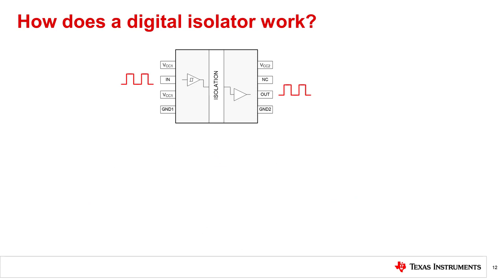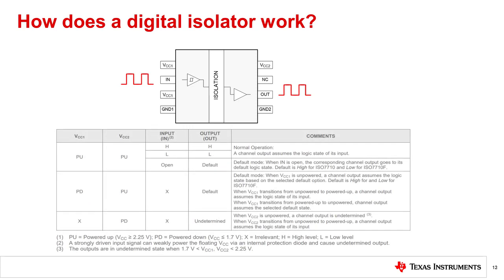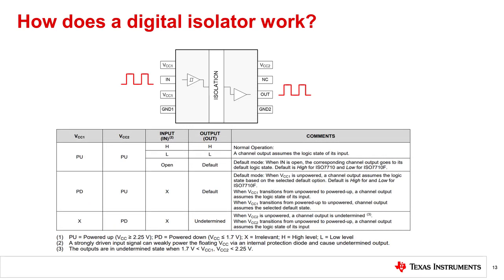Digital isolators use CMOS or TTL logic switching technology and have specified default output states of high or low that can be found in the device functional mode section of the datasheet. As seen in the table, if inputs are disconnected or VCC1 is disconnected, the output will transition to a logic state high — this behavior is called fail-safe high. Alternatively, some devices will go low in a disconnected state, called fail-safe low. This behavior is defined to help prevent error codes in the event of a supply outage or brownout condition.